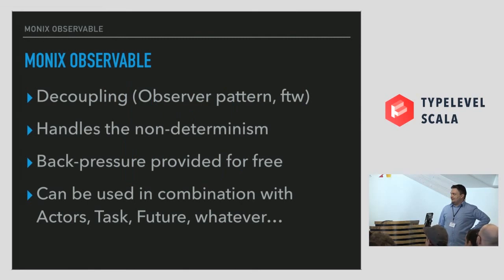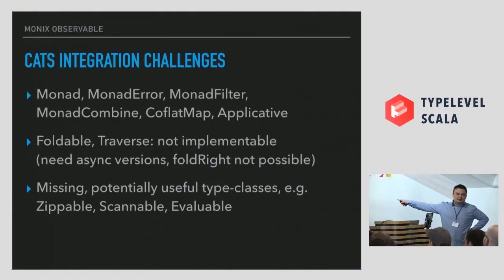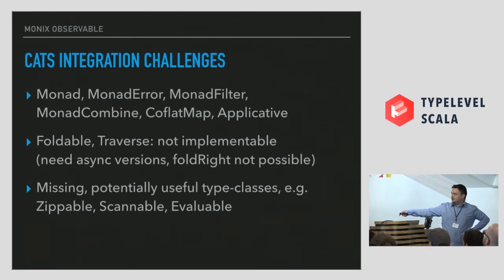The point is that Monix Observable handles decoupling — extreme decoupling — and non-determinism, because it's the observable pattern: all about decoupling. Observable is an observer on steroids. It handles non-determinism and back pressure for free, and can be used in combination with actors. Integration with Cats is in progress. The applicable type classes are covered, but Foldable and Traverse are not applicable because they assume synchronous execution. There are potentially missing type classes like Zippable, Scannable, and Watchable that I'm still trying to figure out.